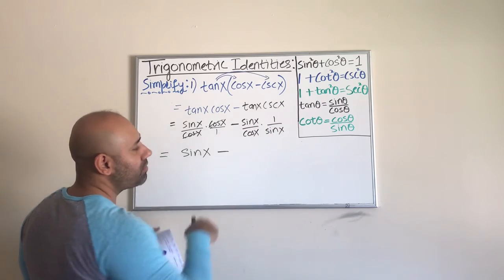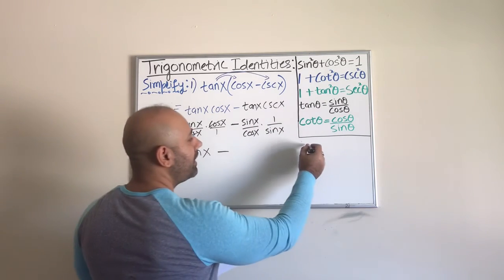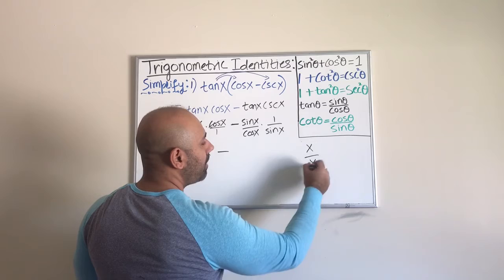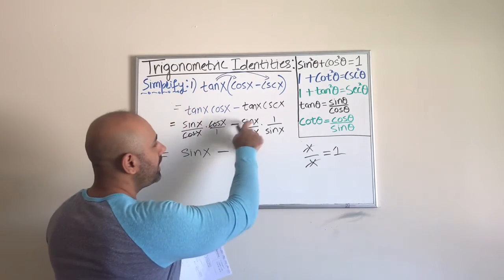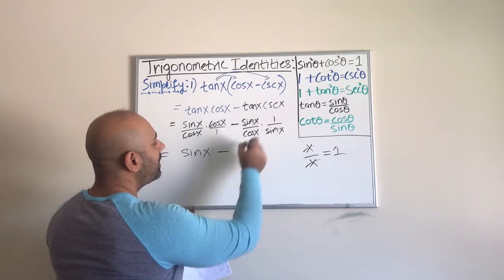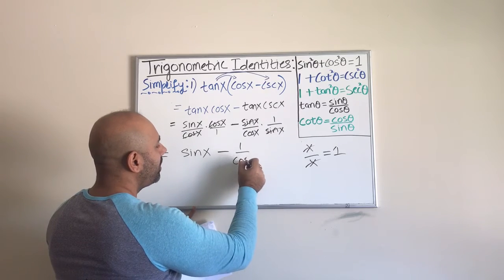Then minus - here I see the same thing. I have sin(x) upstairs and sin(x) downstairs. It's the same as having x upstairs and x downstairs - they just cross out, you get one. So sin(x) and sin(x) cross out, you're left with one. It's 1 over cos(x).